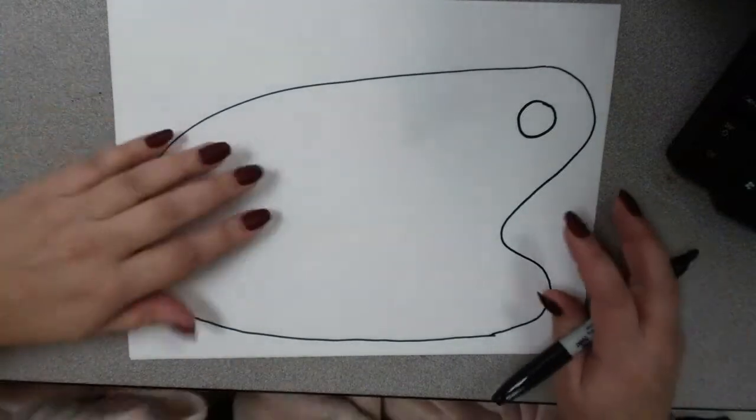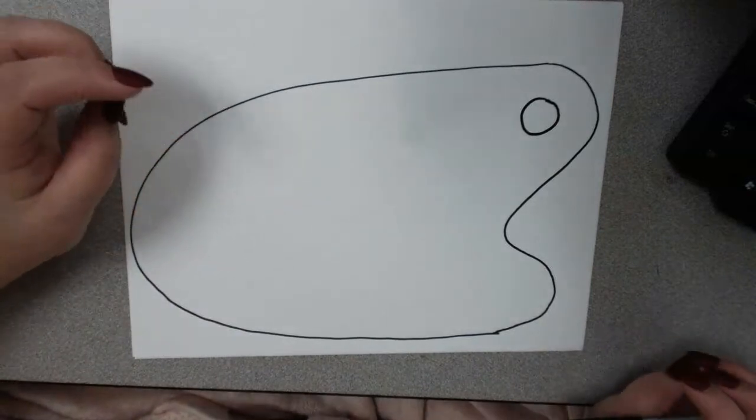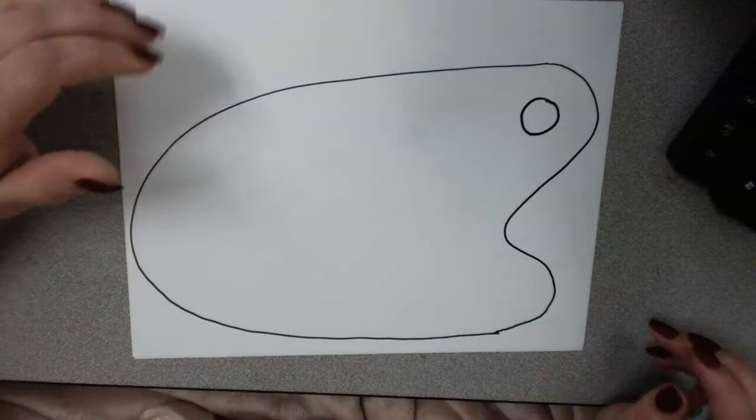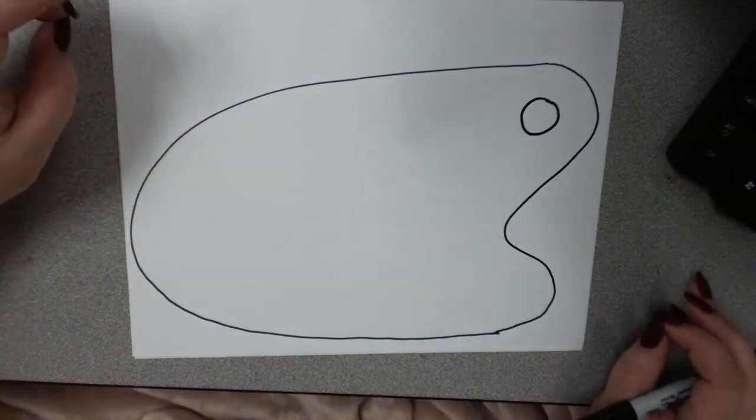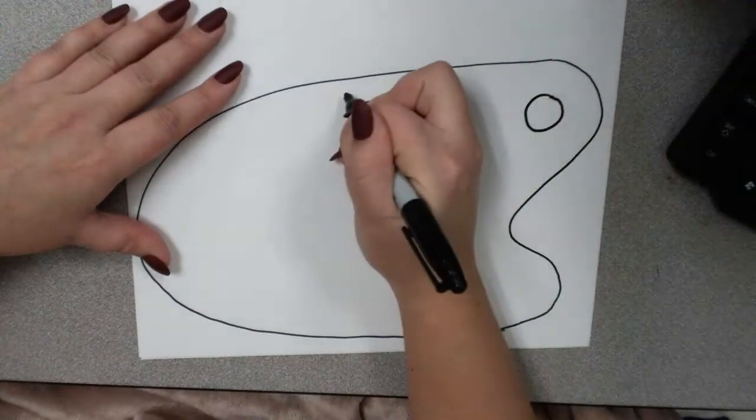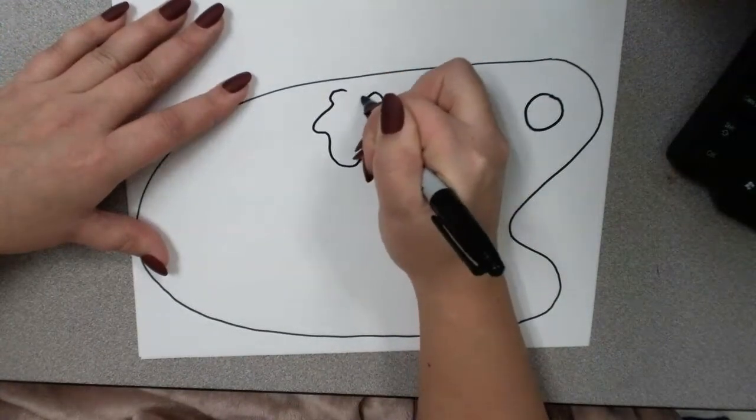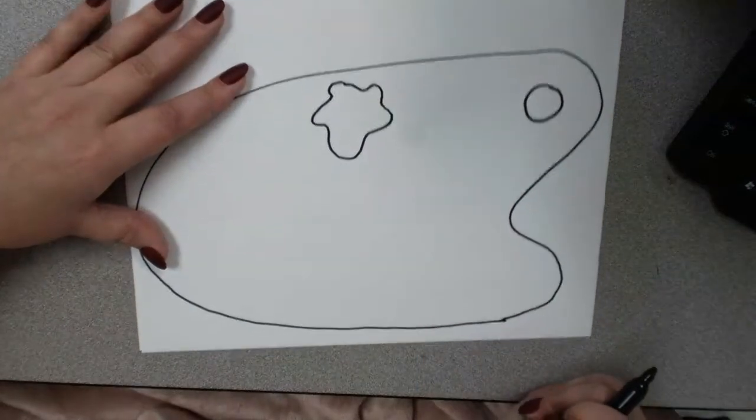Now we're ready to add our paint splotches, which are going to be where we're going to put the colors for the color wheel. We're going to start with the paint splotches for the primary colors. I'm going to start here. In the paint splotch, all you do is kind of make a random wavy line around the outside edge.